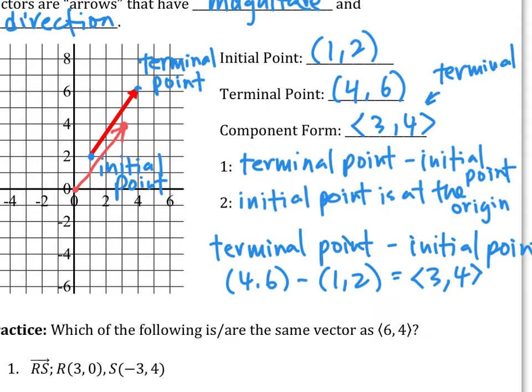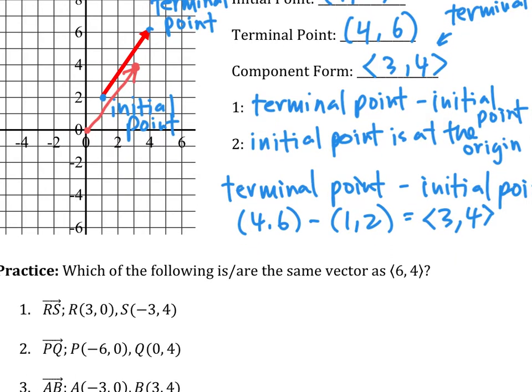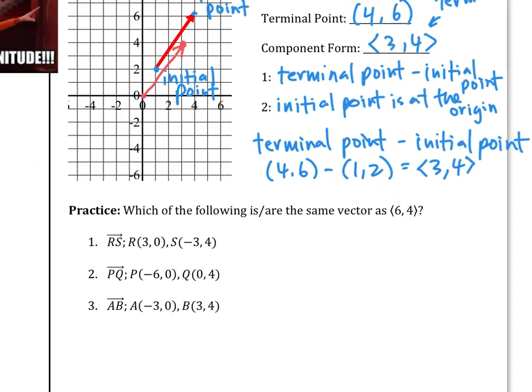There are two ways a vector can be represented. You can have a vector somewhere in space with an initial point and a terminal point. You can then convert that vector into component form by taking terminal minus initial point, and you get the component form, where the initial point is effectively at the origin.